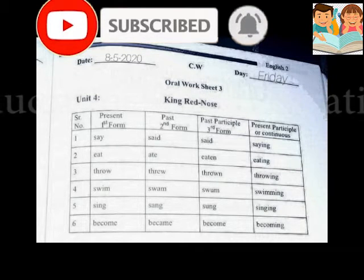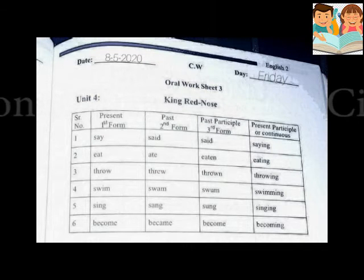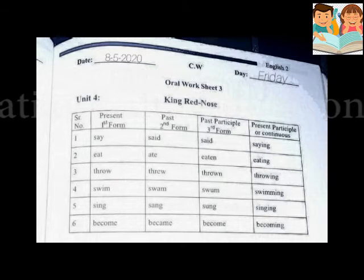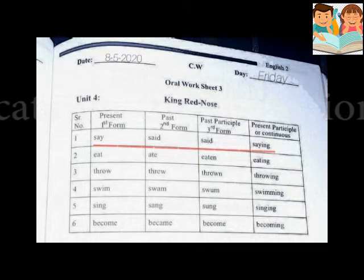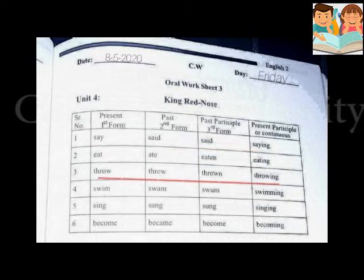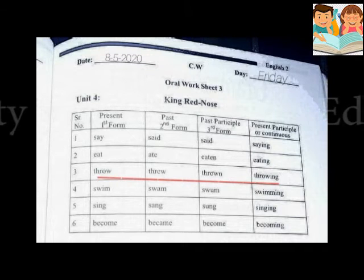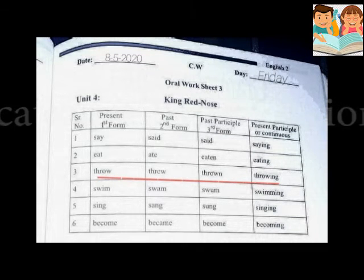Here are 6 words collected from the story. The first action word is say in present form, said in past form, said as past participle, and saying in present participle. Then eat, ate, eaten, eating. The third is throw in present form, threw in past form, thrown as the third form, and throwing as the -ing form.